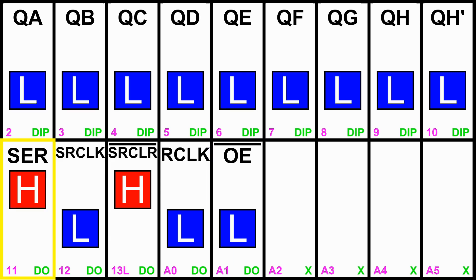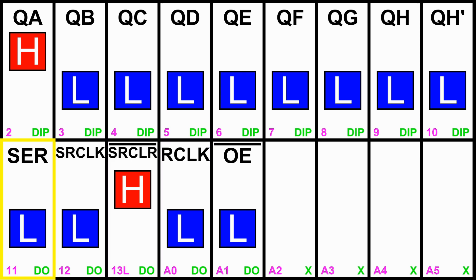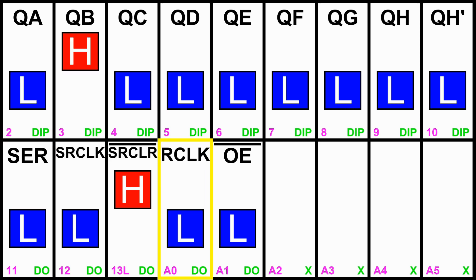So if I set the serial data to high, nothing happens. If I pulse the R clock, nothing happens because I haven't shifted. So if I pulse the serial clock, I have now shifted in a high, but you don't see anything. But if I pulse R clock, you'll see there's the high. And then if I do a low and I pulse the serial clock, then pulse the data clock, you'll see I've done that.